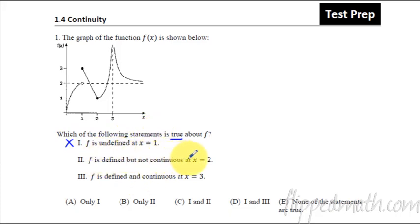f is defined but not continuous at x equals 2. So x equals 2. This is defined but it says it's not continuous. Well this is continuous so that one's false. f is defined and continuous at x equals 3. Here's x equals 3. We've got a vertical asymptote going on here. It is not continuous so that one is false.